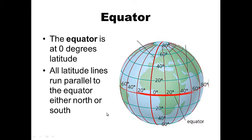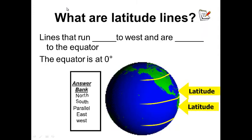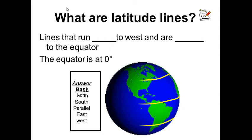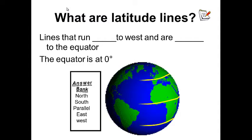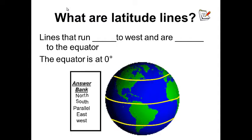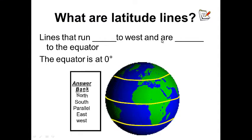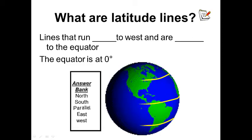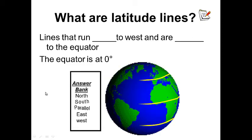The equator splits the Earth in half essentially, right down the middle, at zero degrees. All latitude lines run parallel to each other north and south of the equator. For your notes on latitude lines — question on the left-hand side, answer on the right-hand side. Use the words in the answer bank to best complete the sentence. Make sure you write everything down. Go ahead and pause this while you write.